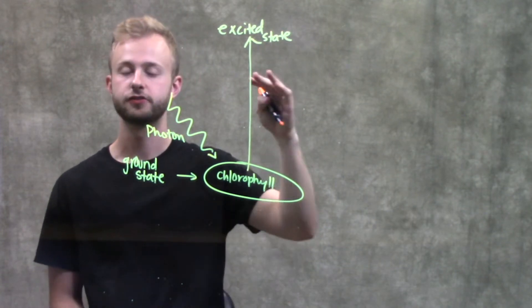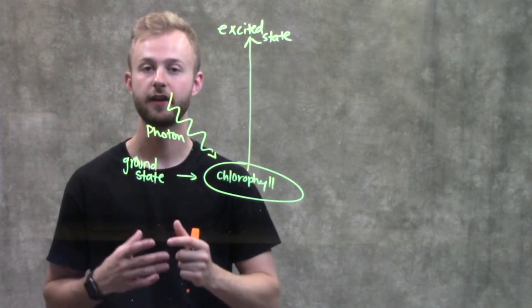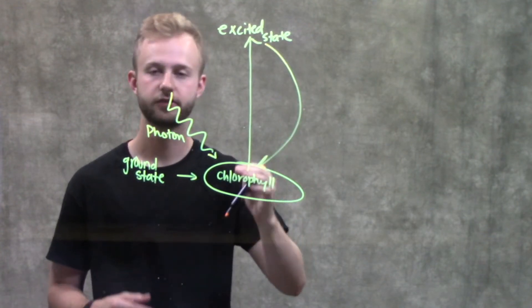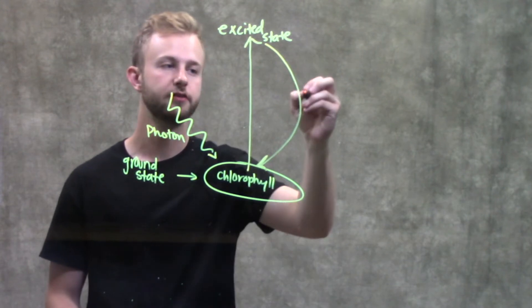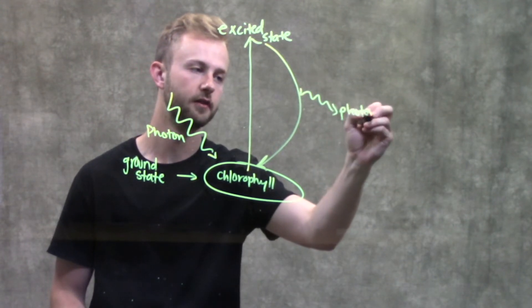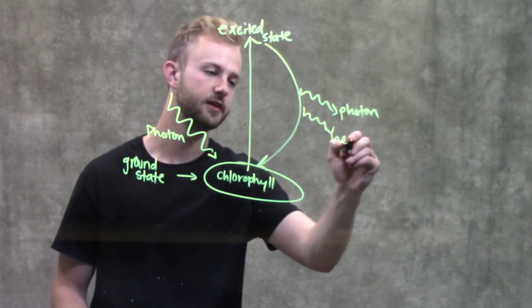Once these electrons are in the excited state, they can't stay there for very long because they're very high energy. So they're quickly going to drop back down to the ground state, and when they do that, they're going to release a photon of light as well as heat.